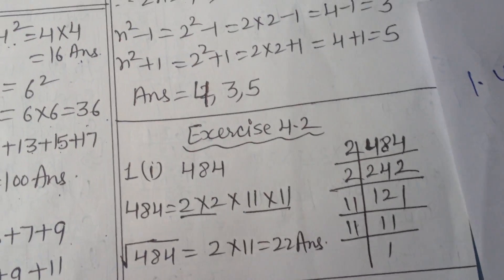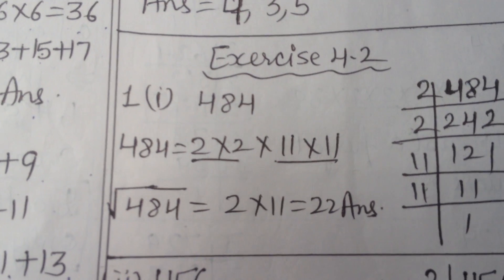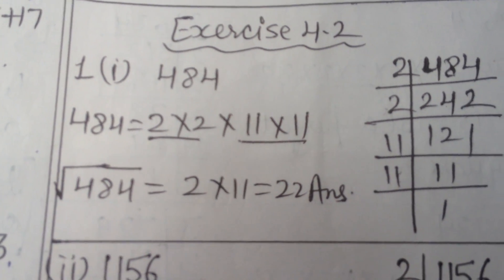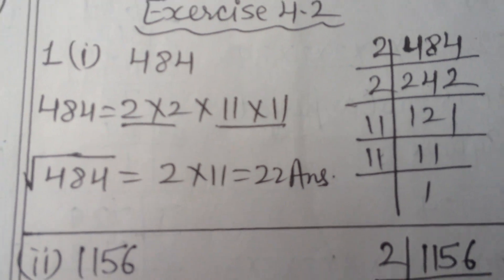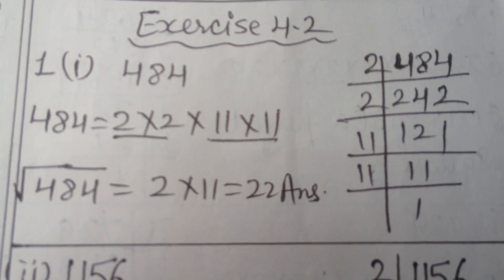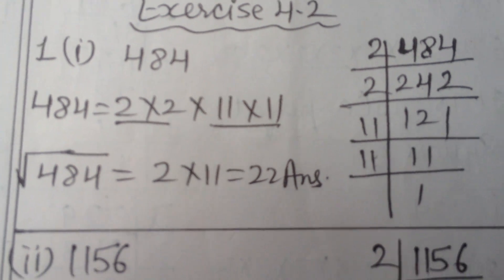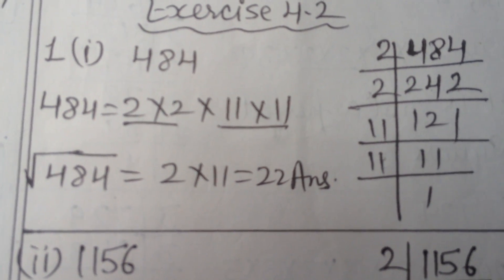So students, today I will start exercise 4.2. So here we will find the square root of the given number. Square root meaning, I explained to you in last video. For example, square of 5.